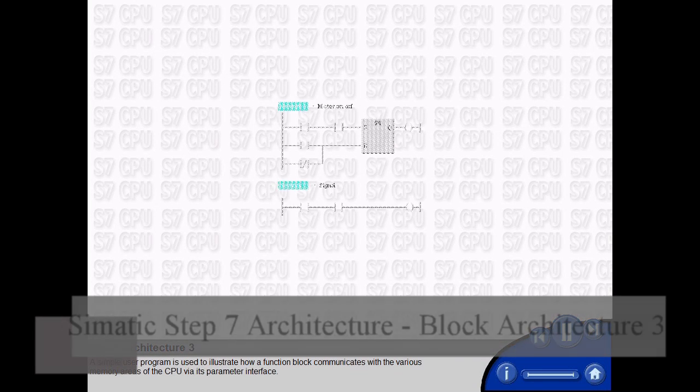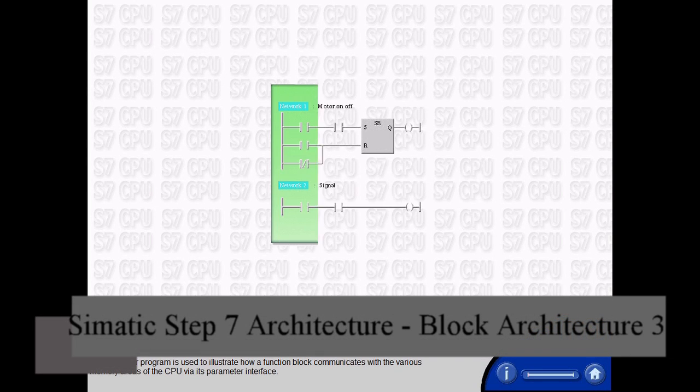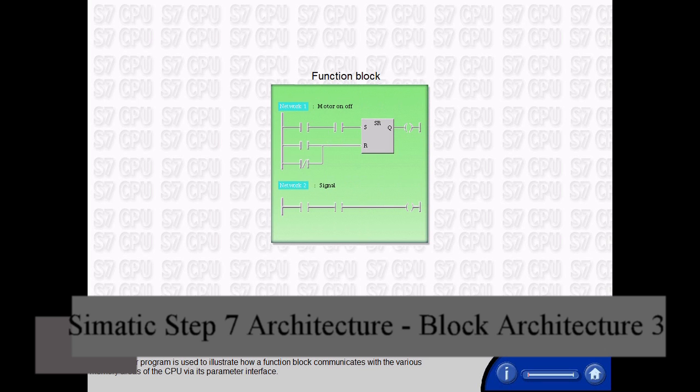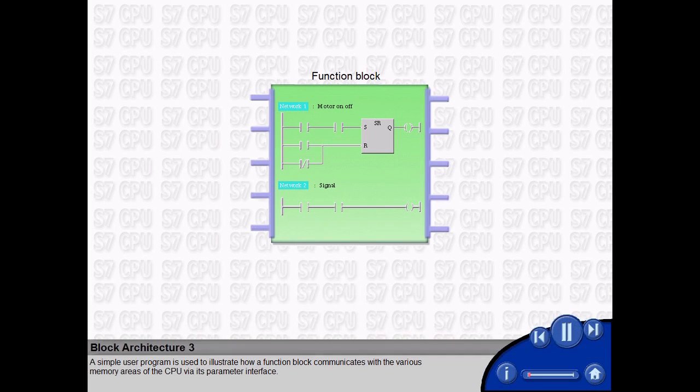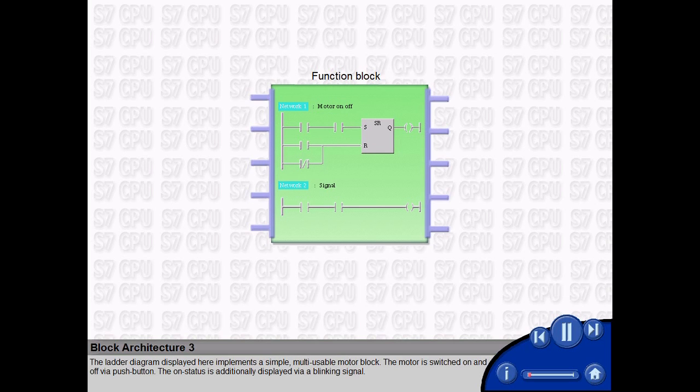A simple user program is used to illustrate how a function block communicates with the various memory areas of the CPU via its parameter interface. The ladder diagram displayed here implements a simple multi-usable motor block.